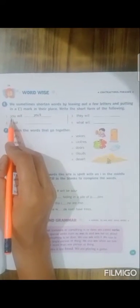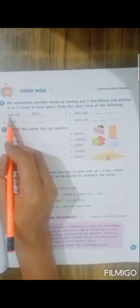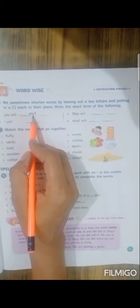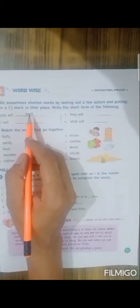The word is you will. The two words have been shortened and written in short form with the help of an apostrophe mark. Students, apostrophe mark is a small comma which is put on top of the word like this.